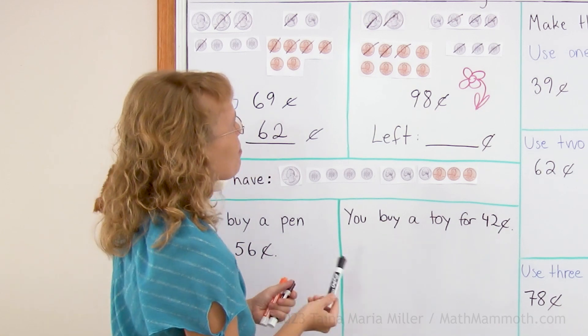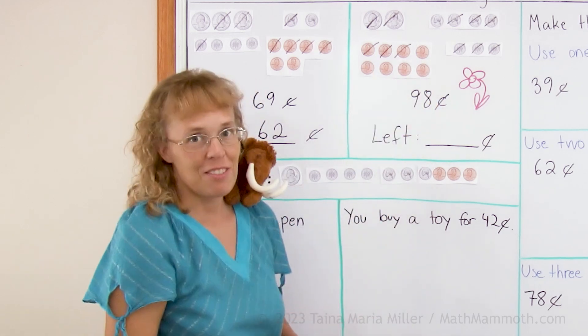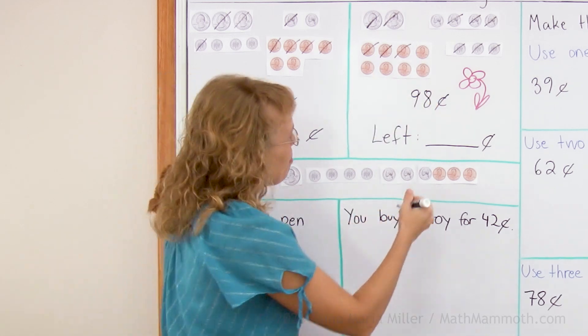That used up most of your money. And what is left? Just a nickel of 5 and then 5 pennies. 5 and 5 makes 10 cents.